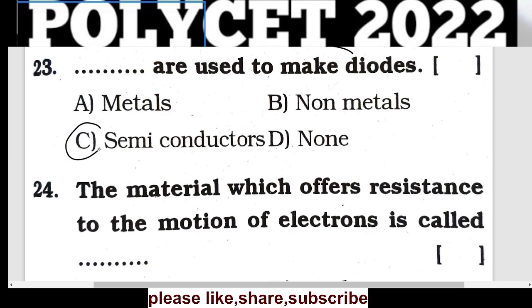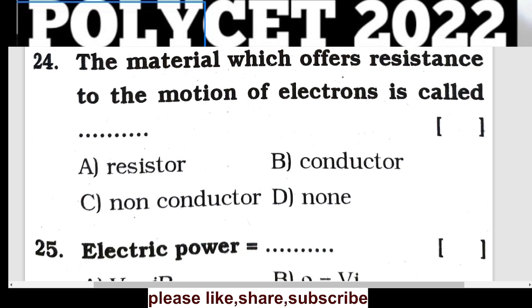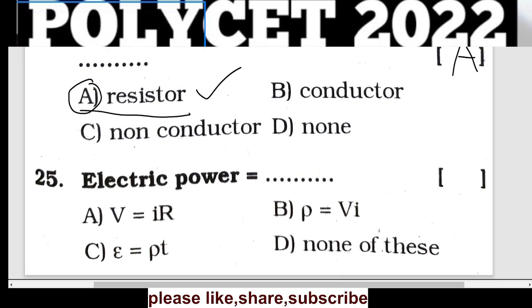Diodes are semiconductors. Electric power is equal to voltage multiplied by current (P = V × I). Option B is the correct answer.